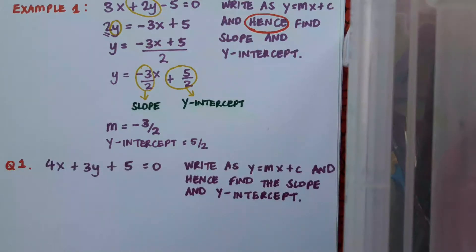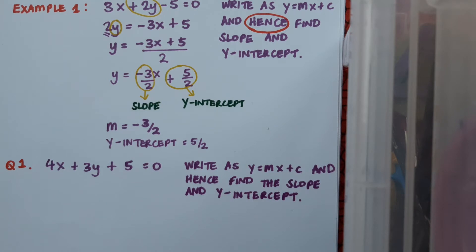Now a question for you. Given the line 4x plus 3y plus 5 equals 0, write that as y equals mx plus c and hence find the slope and the y-intercept. Pause the video here, complete that question, then play and check if you're correct.